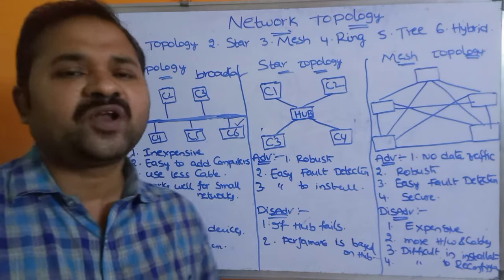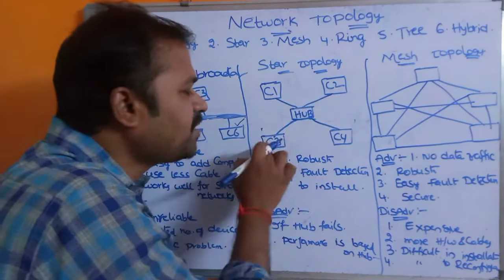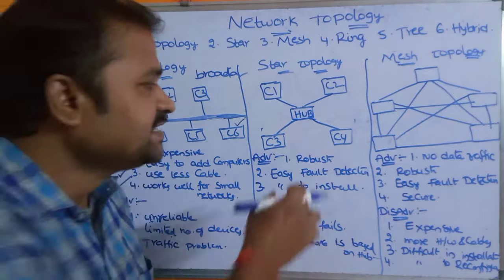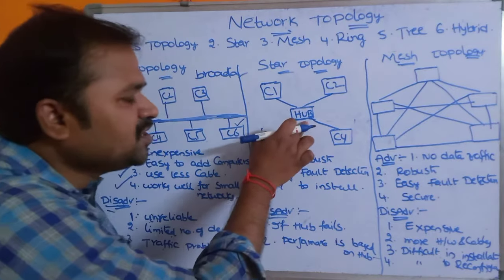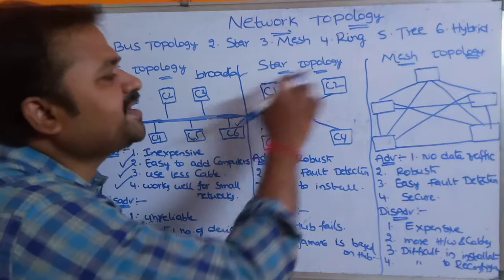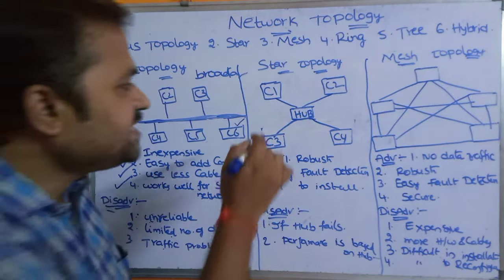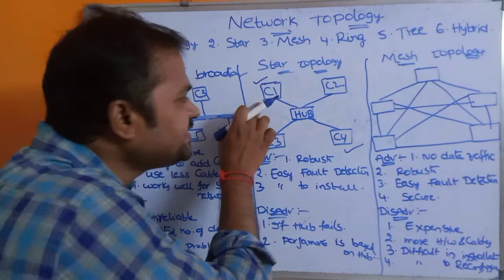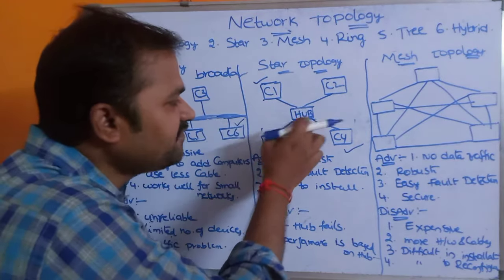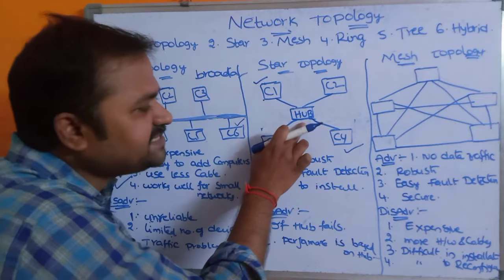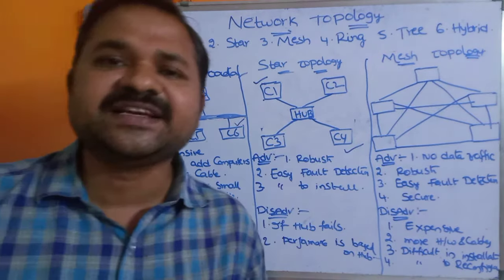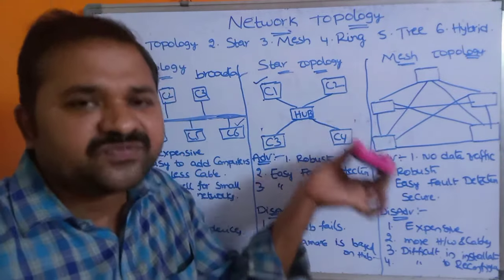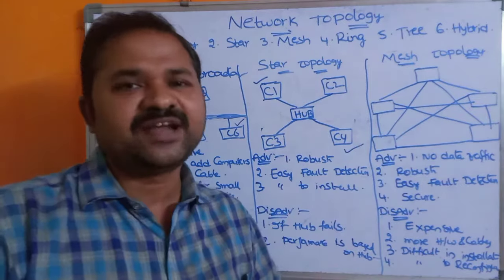The second topology is star topology. In star topology, multiple computers are connected to a central device such as a hub. If C1 wants to send a message to C4, C1 sends the message to the hub first. The hub stores the message and then delivers it to C4 based on the destination address. Direct transmission between computers does not occur.